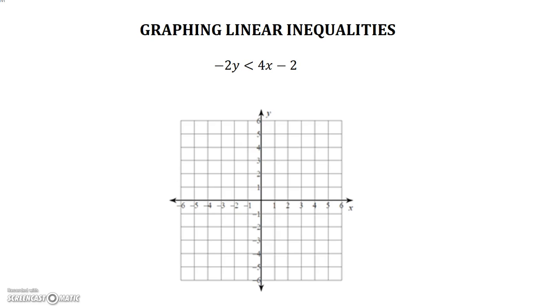Looking at this inequality, we have negative 2y is less than 4x minus 2. This is almost in slope-intercept form. But we have to divide through by negative 2, because it's being multiplied by y. But wait, we're dividing by a negative number, which means that the inequality sign will flip. We're left with y is greater than negative 2x plus 1. And that's the inequality we're working with.